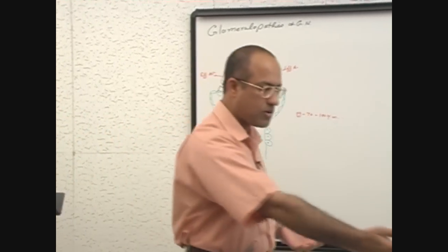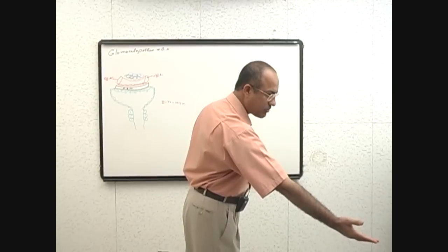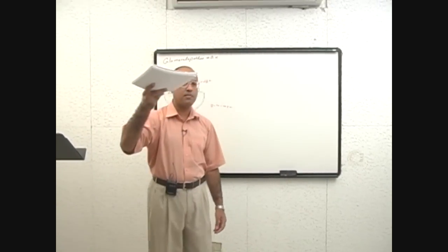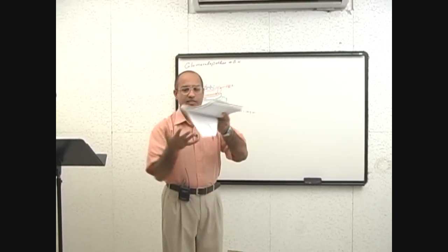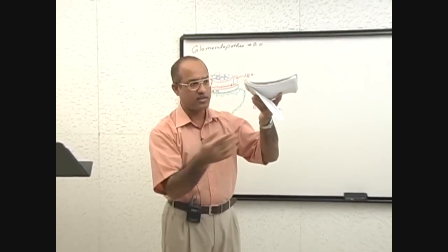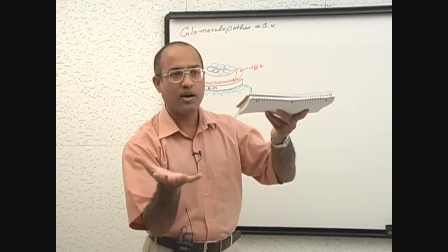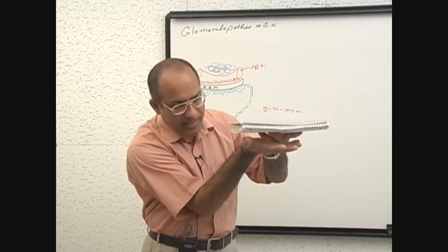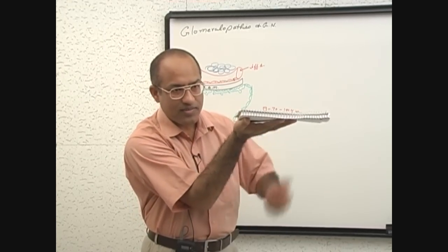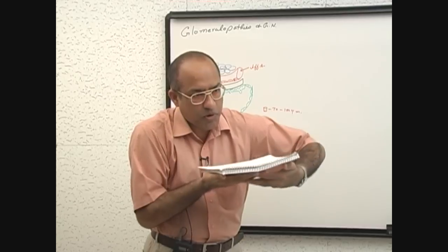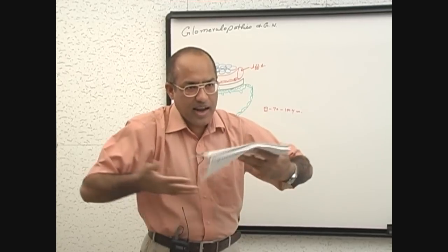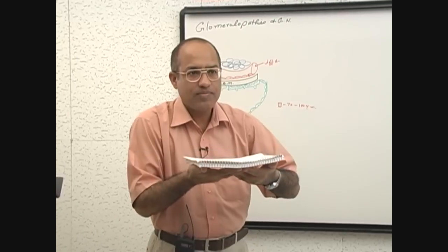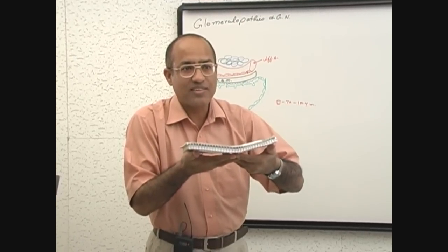Let's suppose this is glomerular basement membrane and this is podocyte. Now, this is podocyte. Podocyte is applied under it. Now, in between the podocytes, other podocyte and this podocyte, they will interdigitate their foot processes.